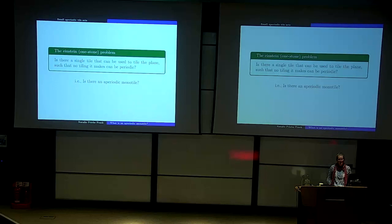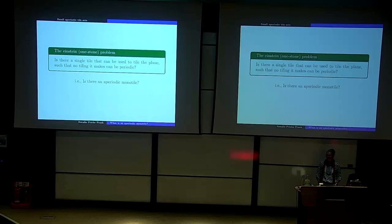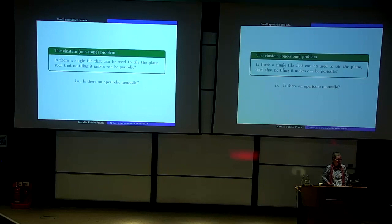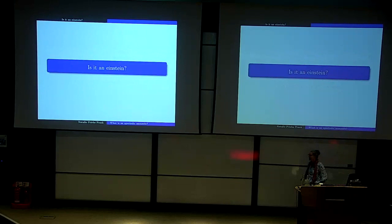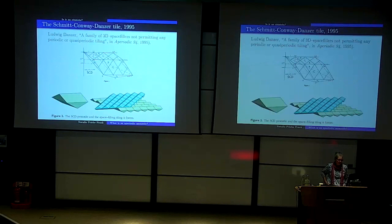From a historic standpoint, there were two pairs of aperiodic tiles discovered in the seventies — Penrose's and Ammann's — and there are many other two-tile aperiodic sets. So the question became: what about one tile? Can you make a single tile that can only tile non-periodically? That's the Einstein — one stone — problem: is there a single tile that can tile the plane such that no tiling it makes can be periodic? That is, is there an aperiodic monotile? That problem stood until March of this year.